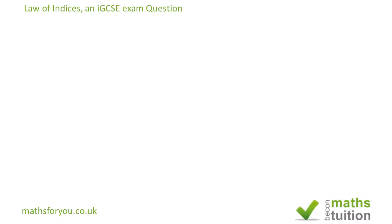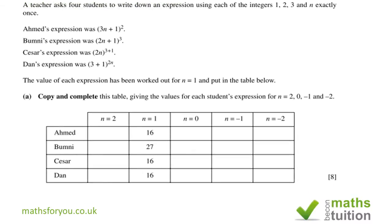The important thing is not to mix up Ahmed, Bumnis, Cesar, and Dan — I made one or two mistakes myself by mixing up Ahmed and Bumnis. For Ahmed: when n=2, we have 3×2=6, 6+1=7, 7²=49. When n=0, 3×0=0, 0+1=1, 1²=1. When n=−1, 3×(−1)=−3, −3+2=−2 (note: should be −3+1=−2 as spoken), (−2)²=4. When n=−2, 3×(−2)=−6, −6+1=−5, (−5)²=25.